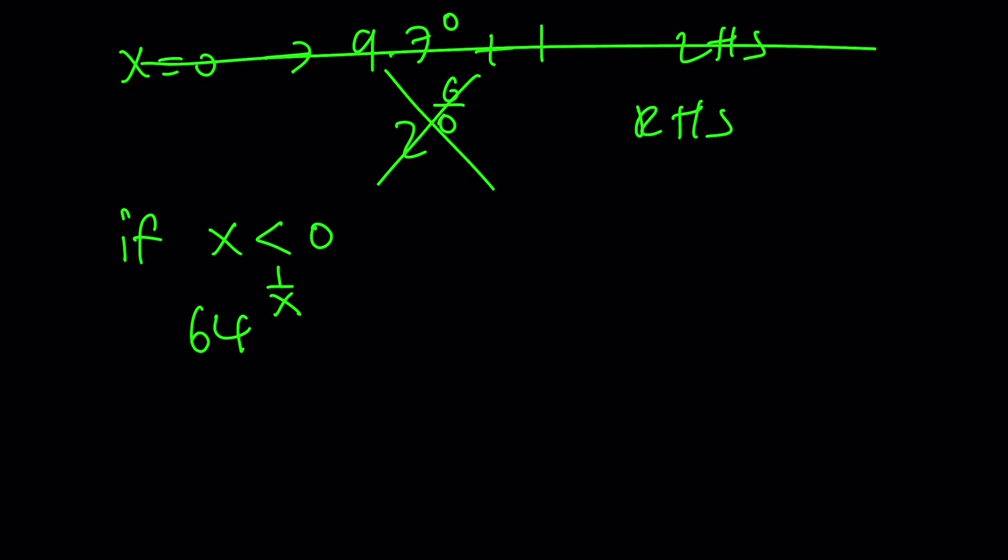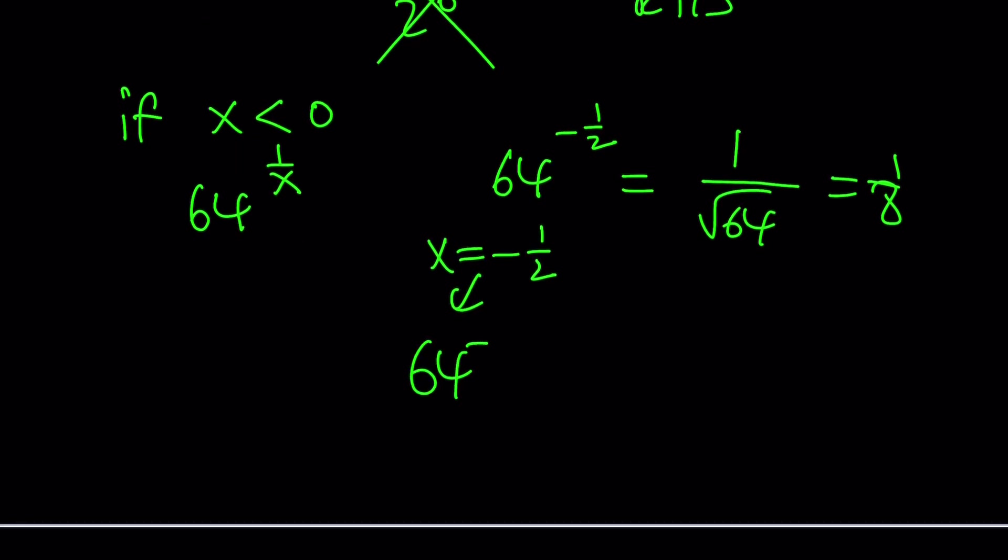Like, something like 64 to the power of negative 1 half. What does that mean? It means 1 over square root of 64, which is 1 over 8. Or, any other negative number. x could be negative 1 half as well, in which case, you'll get 64 to the power of negative 2, but that just means 1 over 64 squared.